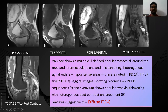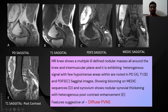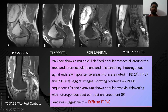In another MRI knee, well-defined nodular masses were seen all around the knee joint, extending into the intramuscular plane. On PD sagittal, T1 sagittal, and PDFS sagittal, heterogeneously hyperintense masses are seen with blooming on gradient sequences, and heterogeneous post-contrast enhancement. This patient went for arthroscopy and it turned out to be diffuse PVNS. Joint effusion in the suprapatellar region can also be seen.